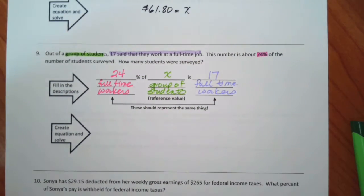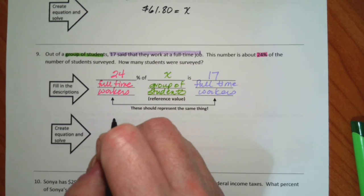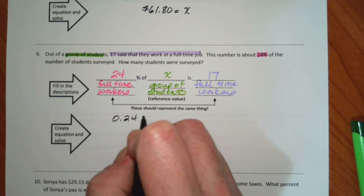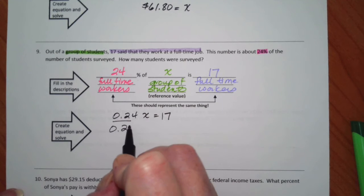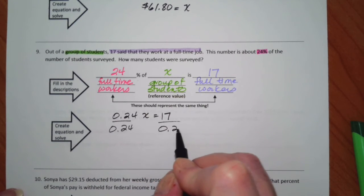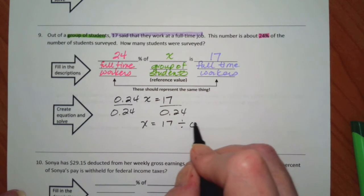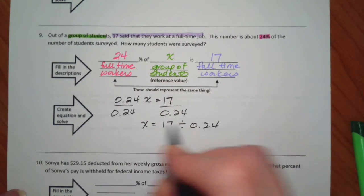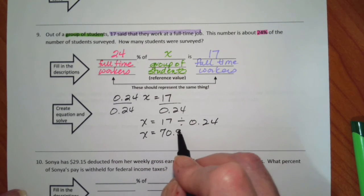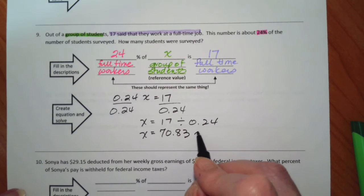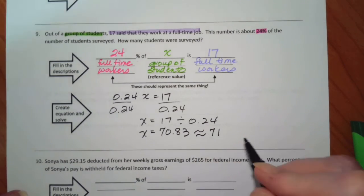That's what we don't know, so that's our x. Turn it into a decimal. 0.24 times x is equal to 17. When I divide both sides by 0.24, I get that x is 17 divided by 0.24. So x is 70.83, and I am going to round that to 71 students.